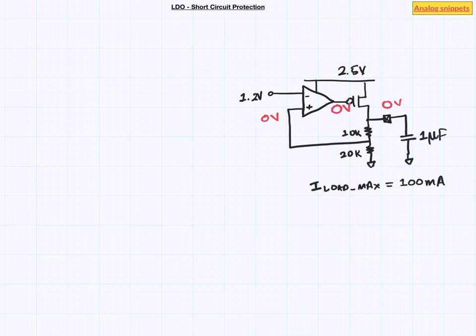So that means we have maximum possible gate to source voltage across our power PMOS. Now consider for the moment how you size this power PMOS. You would size this power PMOS to provide 100mA of current in your worst PVT corner while still remaining in the saturation or at the edge of saturation.